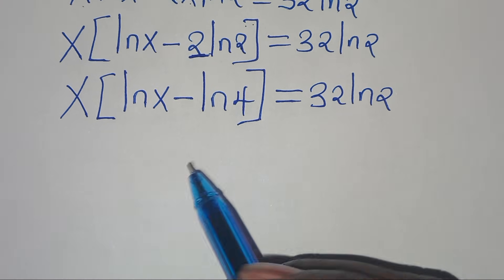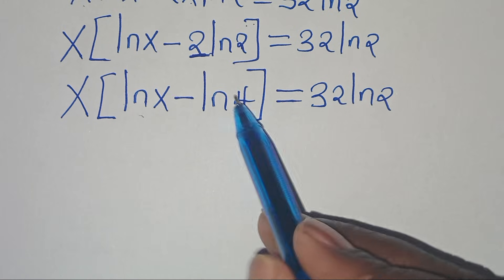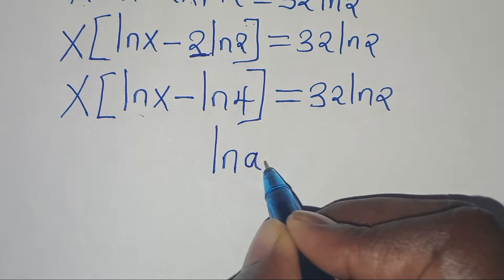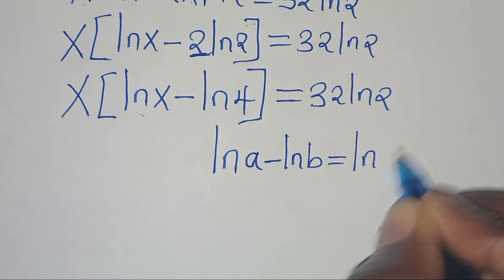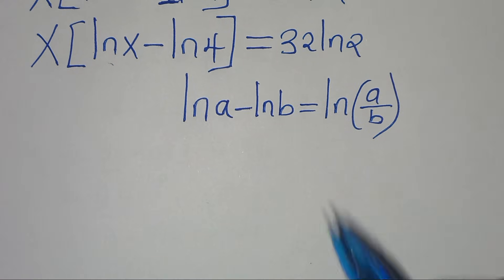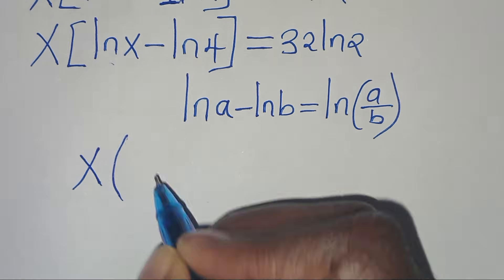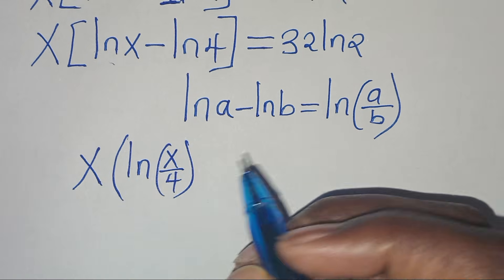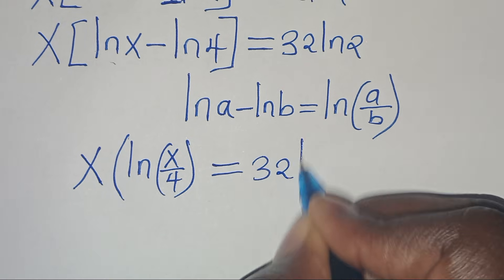Now we have that ln of x minus ln of 4 is in the form of ln of a minus ln of b, which we can express as ln of a divided by b. Applying this property, we have x into the parenthesis of ln of x over 4, and this is equal to 32 ln of 2.